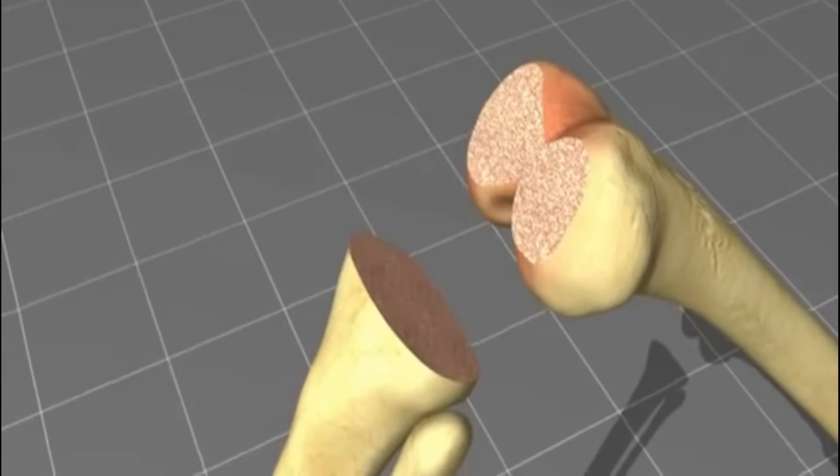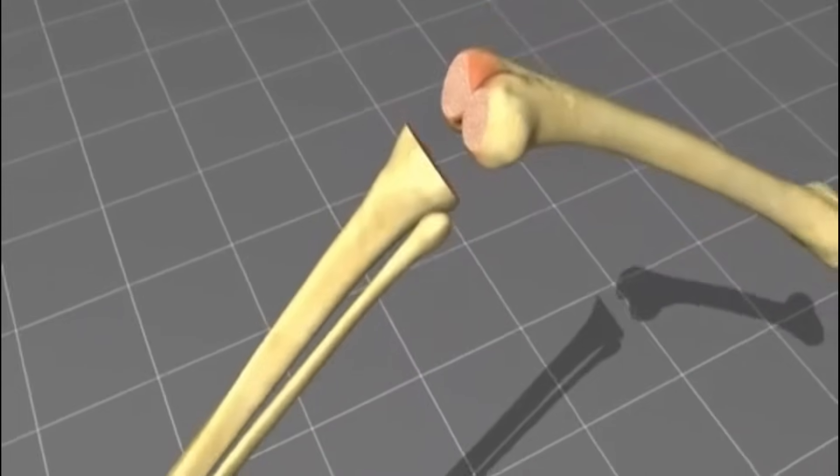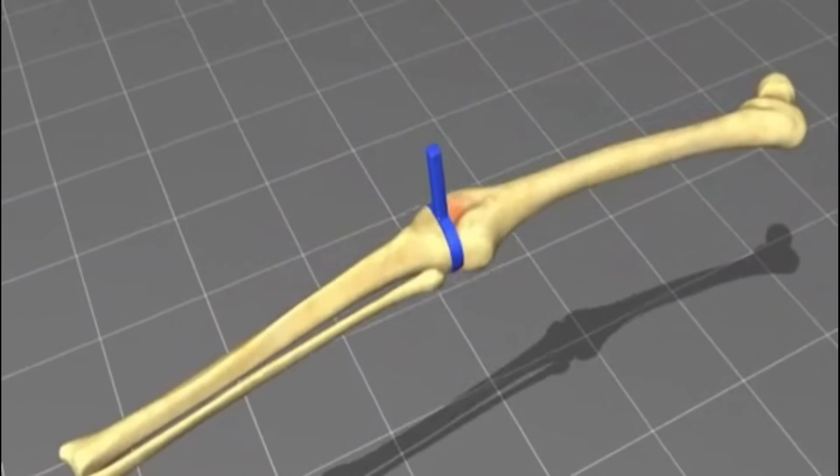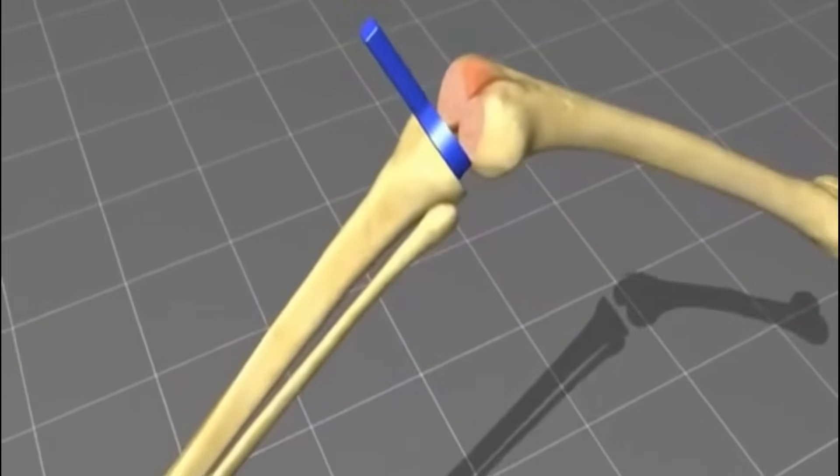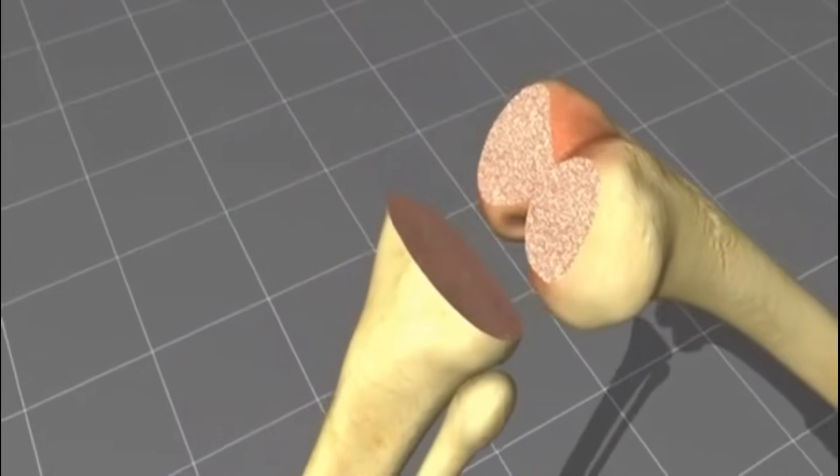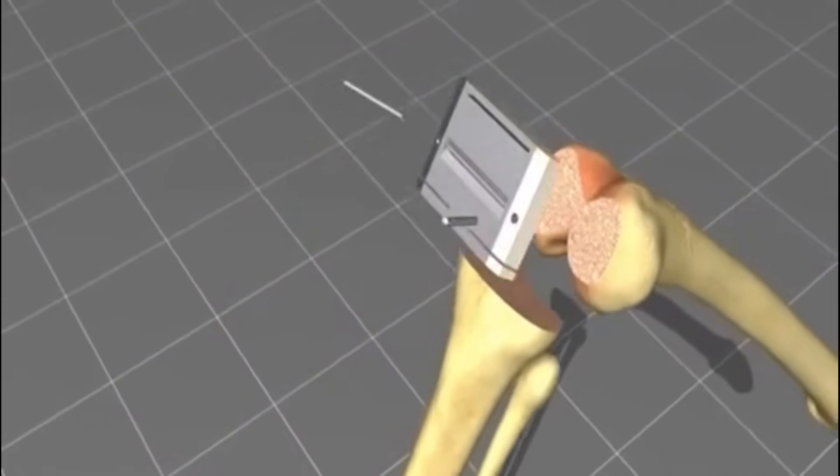Now, the knee is taken into full extension. A spacer block is positioned and the knee alignment and the extension and the ligament tension is checked. Also in 90-degree flexion, this spacer block gives me the later position of the femoral component.